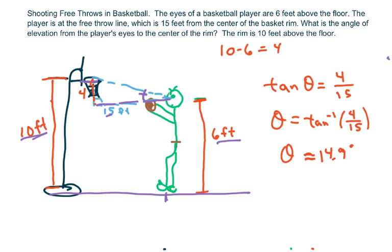So the angle of elevation from the player's eyes to the center of the rim is 14.9 degrees. Thank you and have a nice day!